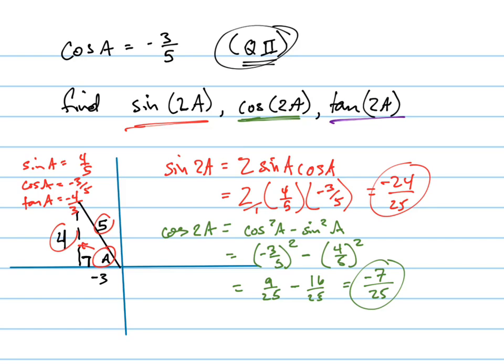And then the last one is the tangent 2a. We'll look at the formula for tangent 2a, and there's our tangent 2a formula. So that equals 2 times negative 4 thirds.